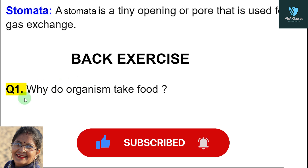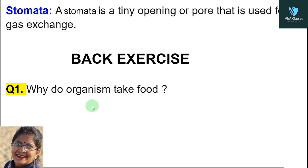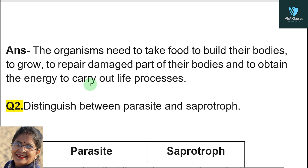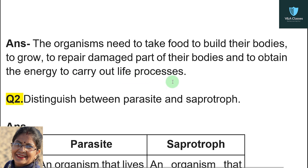First question: why do organisms take food? The organisms need to take food to build their bodies, to grow, to repair damaged parts of their bodies, and to obtain the energy to carry out life processes.